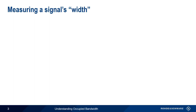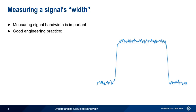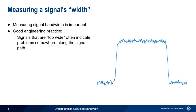We'll start with what would seem to be a very simple task: measuring the width of a signal. There are two main reasons why we might need or want to measure the width of a signal. The first of these we'll call good engineering practice. A modulated signal usually has a well-defined shape and well-defined limits, so if the signal width begins to change or to grow, this is often a good indication that something is wrong somewhere along the signal path — for example, a faulty filter, or spectral regrowth caused by an overdriven amplifier.